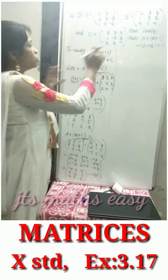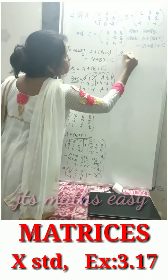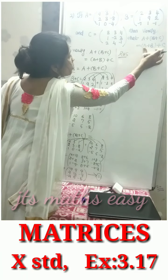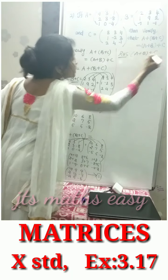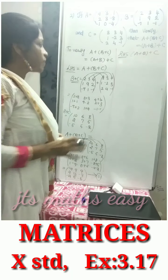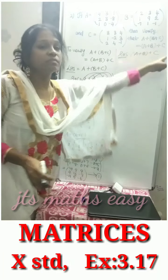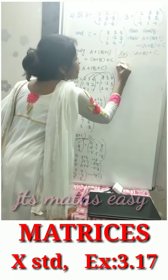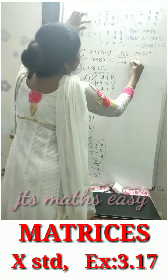The same thing, next we do for RHS. LHS is over, now consider RHS where we have A plus B plus C. First find out A plus B, then add C.